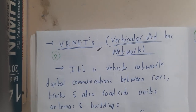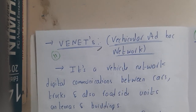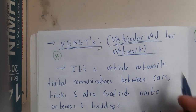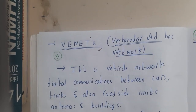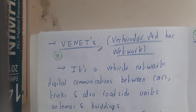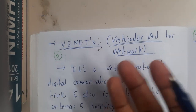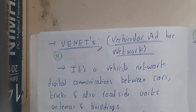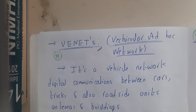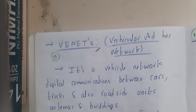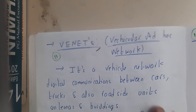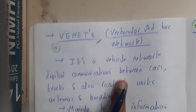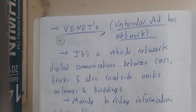In this lecture, let us go through the concept of VANETs. VANETs — the full form is Vehicular Ad Hoc Network. It is not mobile; it is vehicular. So instead of mobile, here it is a vehicle — your car or your bike. It is a vehicular network involving digital communication between cars, trucks, and also roadside units like antennas and buildings.